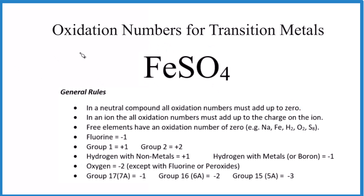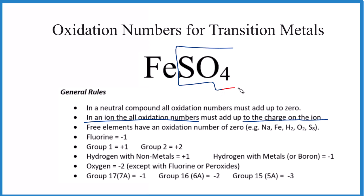Let's try one with a polyatomic ion. When finding oxidation numbers for transition metals — say for the iron in FeSO₄ — you need to know that in an ion, all the oxidation numbers add up to the charge on the ion. The sulfate ion has a charge of two minus, so those oxidation numbers add up to two minus. Since everything must add up to zero, the iron has to be two plus. Knowing your polyatomic ions is a very valuable skill in chemistry.